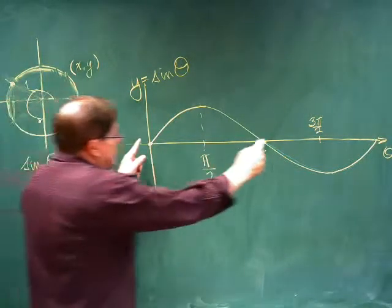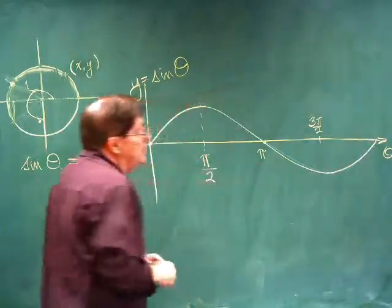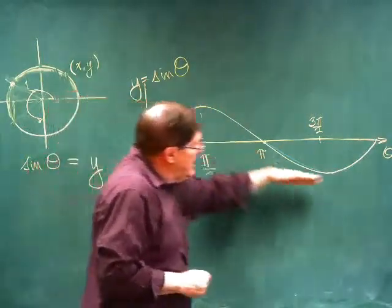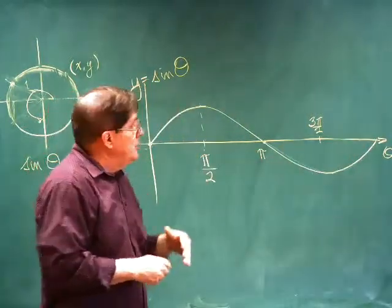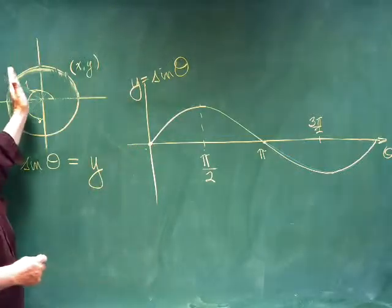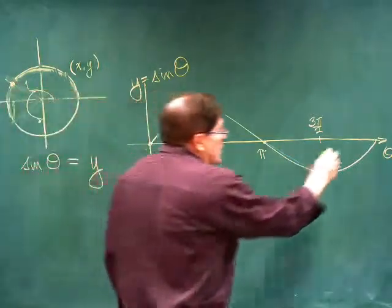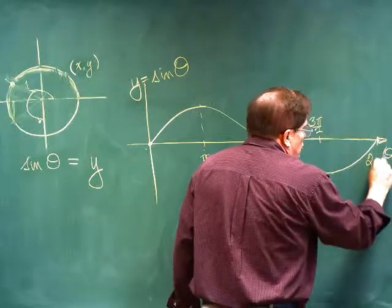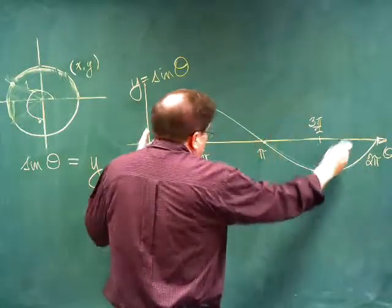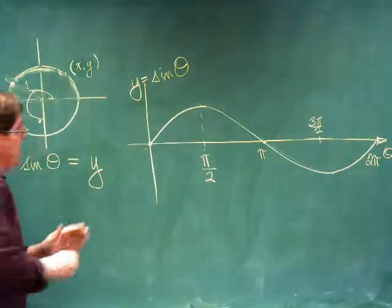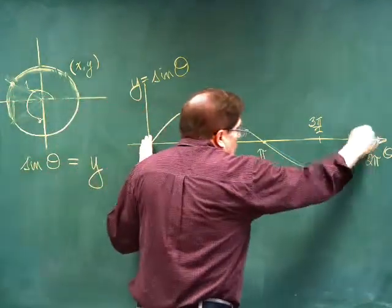This length right here is called the period. The period is the length that it takes to go through one cycle, and now it will just start over again doing the same thing. So, this happens at 2 pi, and the period of the sine is 2 pi.